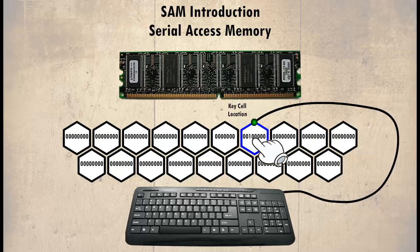Once found, the data within the cell can be passed on to the CPU. The obvious problem is that every cell has to be checked, and the more memory there is, the longer it will take. With this type of memory, data can only be accessed sequentially.